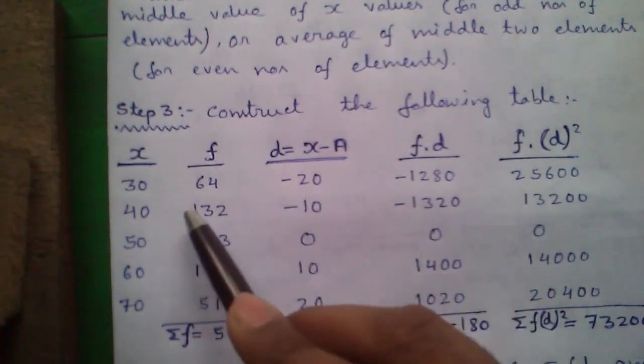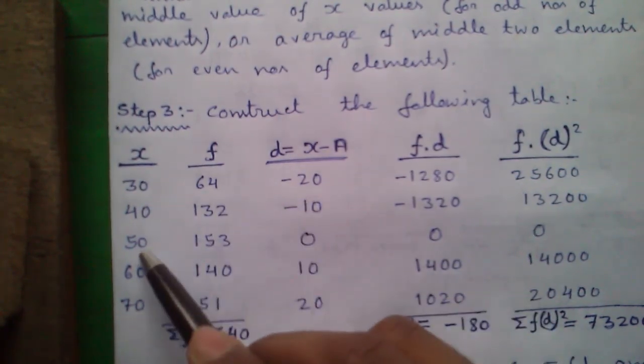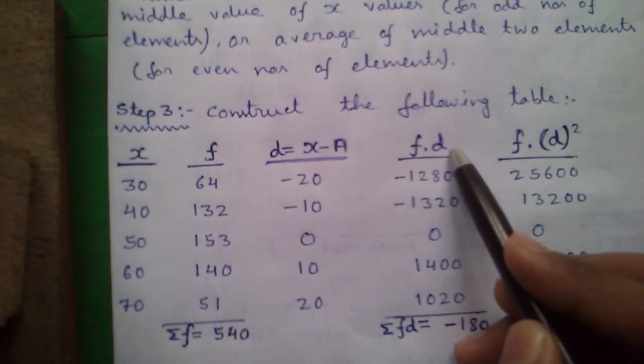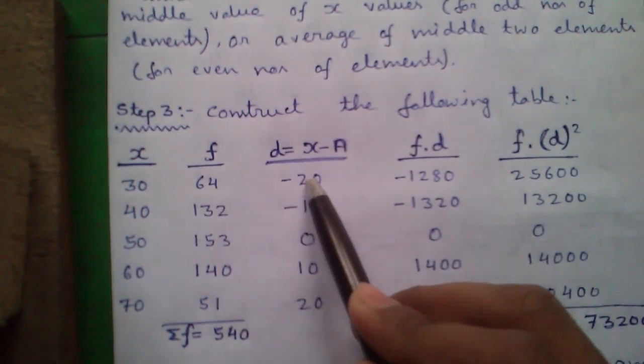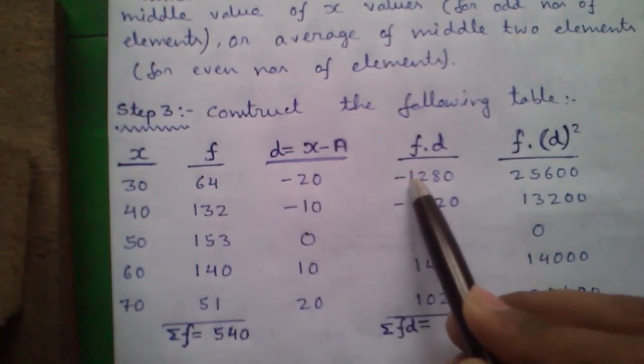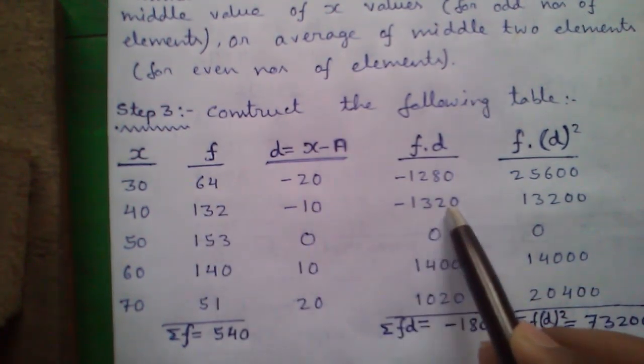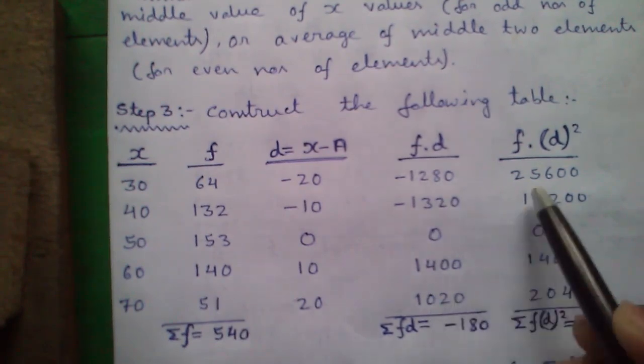So, minus 20. Similarly, 40 minus 50 minus 10, 50 minus 50, 0 and so on. Next, F into D. 64 into minus 20 is minus 1280. 132 minus 10 is minus 1320 and so on.